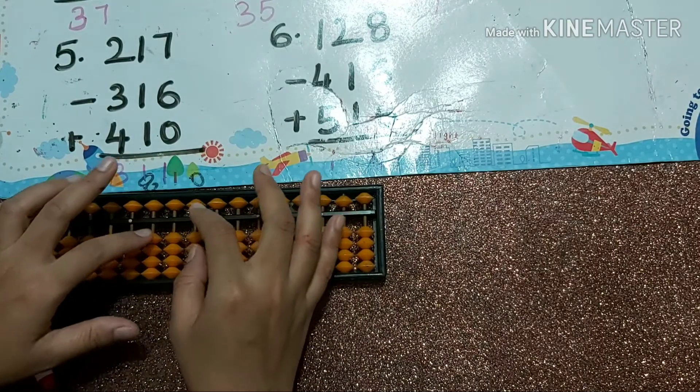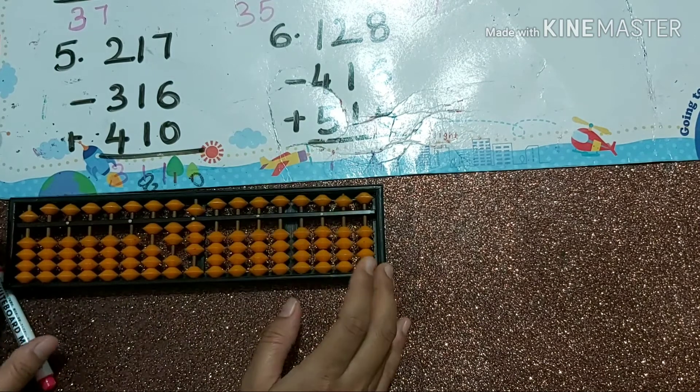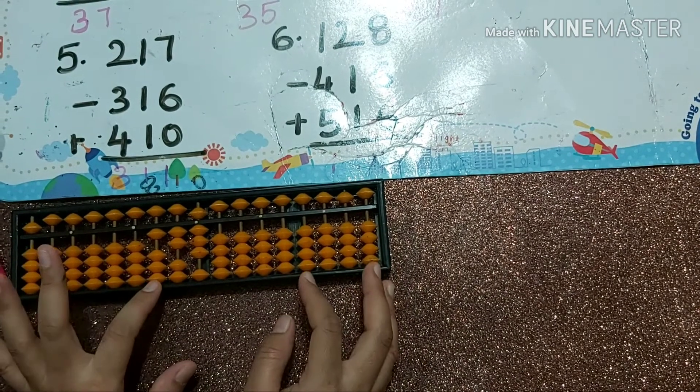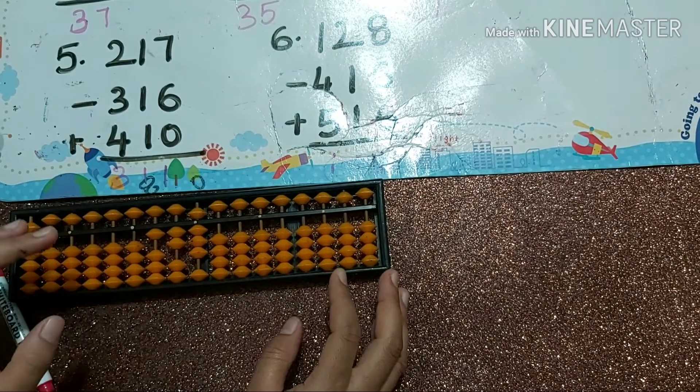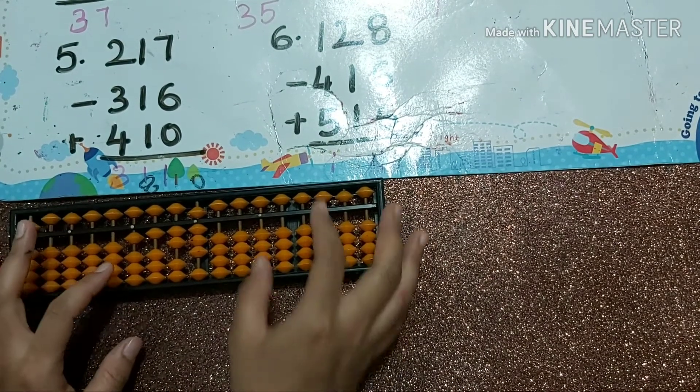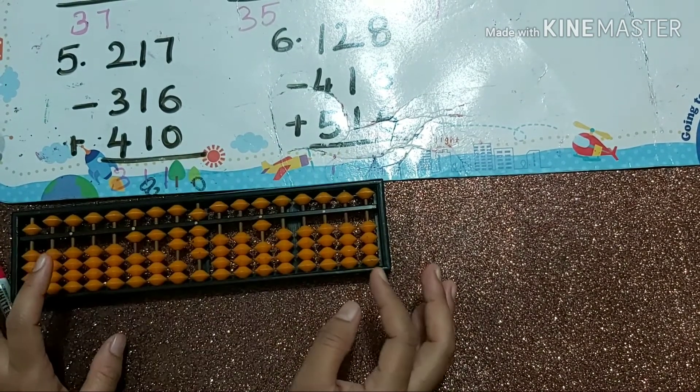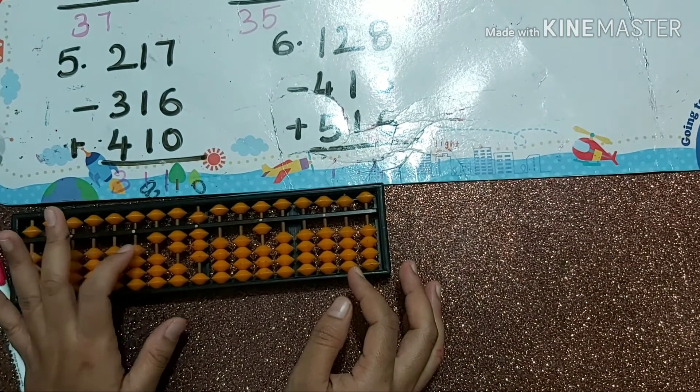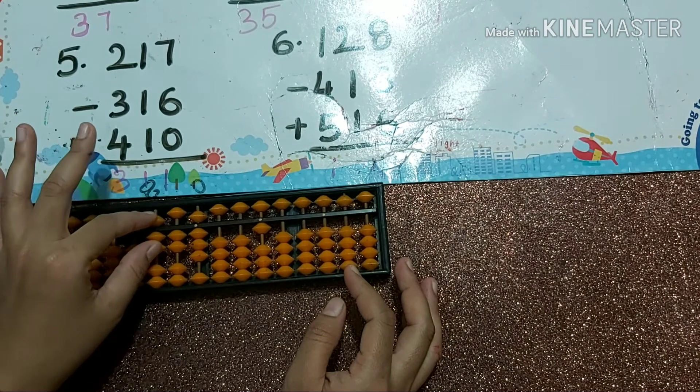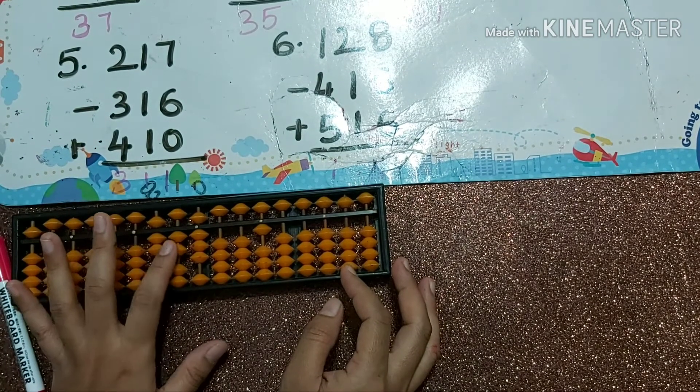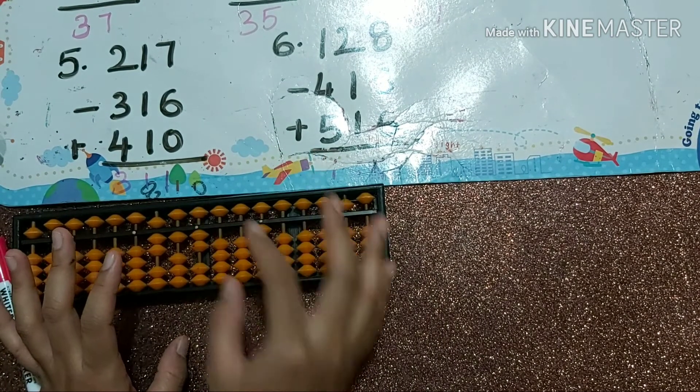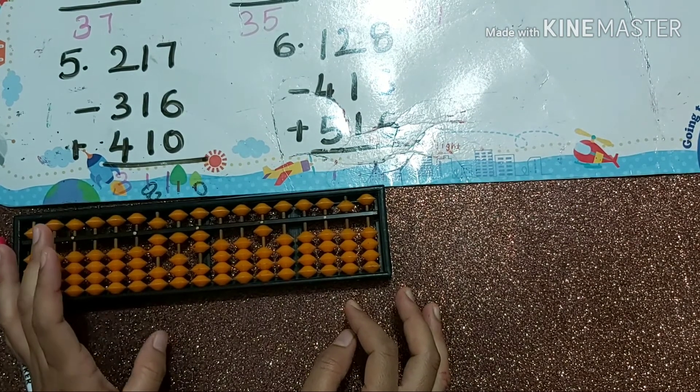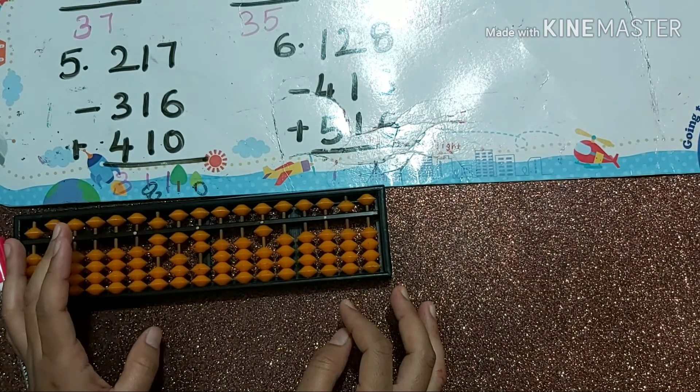Next one: 128 minus 41. In hundreds place you can't do, then I must do minus ten plus six. Next minus one. Next minus six. Next we are doing plus five: plus ten minus five. Next plus one, and maybe this one is plus six.